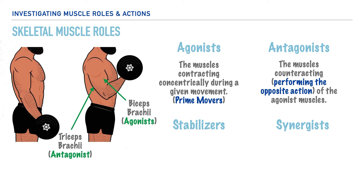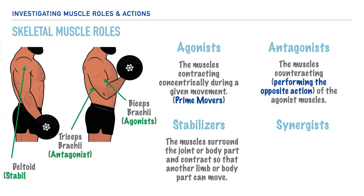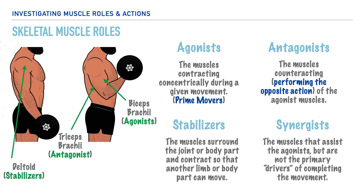Muscles can also play the role of stabilizers. As a stabilizer, these muscles surround the joint or body part and contract so that another limb or body part can move. In our example of the biceps curl, the stabilizers would be the deltoid muscle, which maintains the stability of the shoulder joint during this movement, enabling the elbow and forearm to move with relative ease. Next are synergists, which are muscles that assist the agonist but are not the primary drivers of completing the movement — they simply assist the agonist.